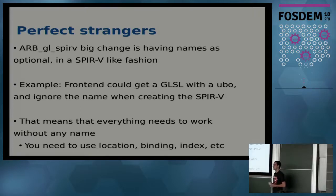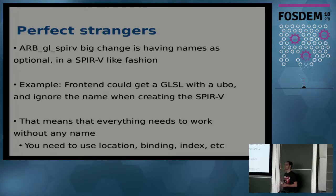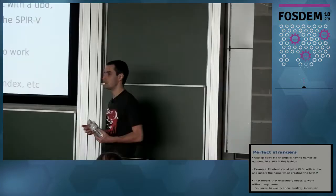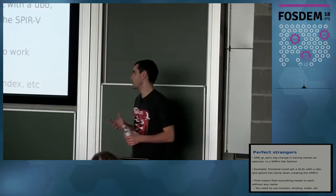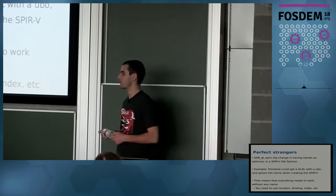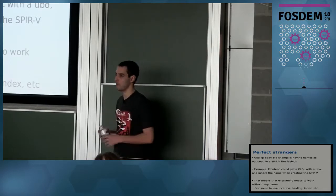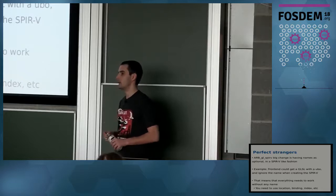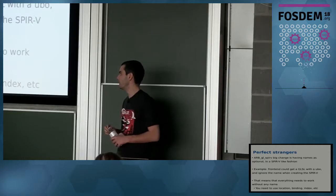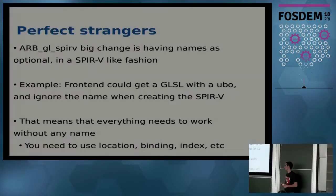The big change, in my opinion, is that in SPIR-V the names of variables, uniforms, and so on are considered debug information — they are optional. The OpenGL SPIR-V extension maintains that optionality. So a front-end could take a GLSL shader and produce a binary with no names at all. That means OpenGL must be able to load a SPIR-V binary with no names. Our current approach: since names are optional, we are not implementing name-based lookup for now. Instead, you must use explicit locations, bindings, and indexes.